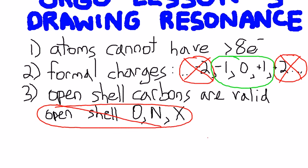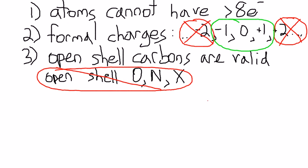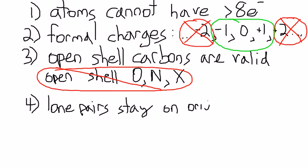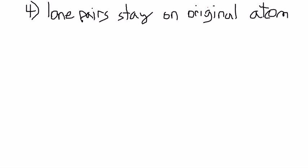Okay, and now we will go into rule 4, which actually helps us in drawing resonance. And this is that lone pairs always stay on the original atom. Whether it's associated with a bond, or if it stays a lone pair, it has to stay with the original atom. So lone pairs stay on the original atom.